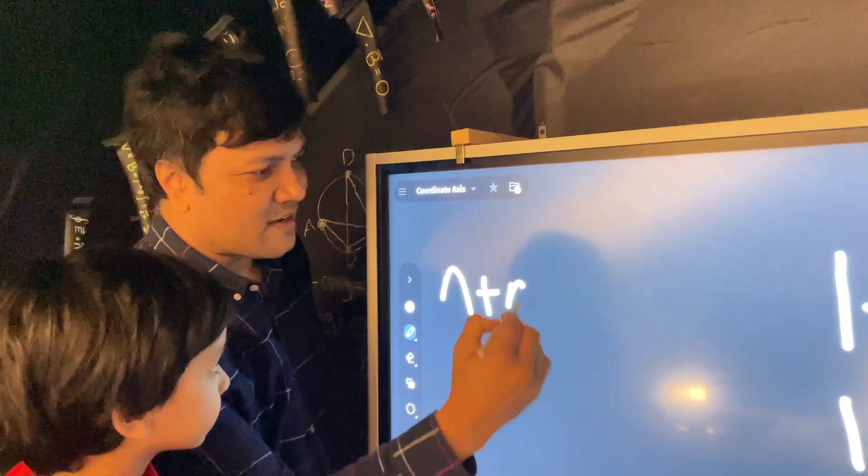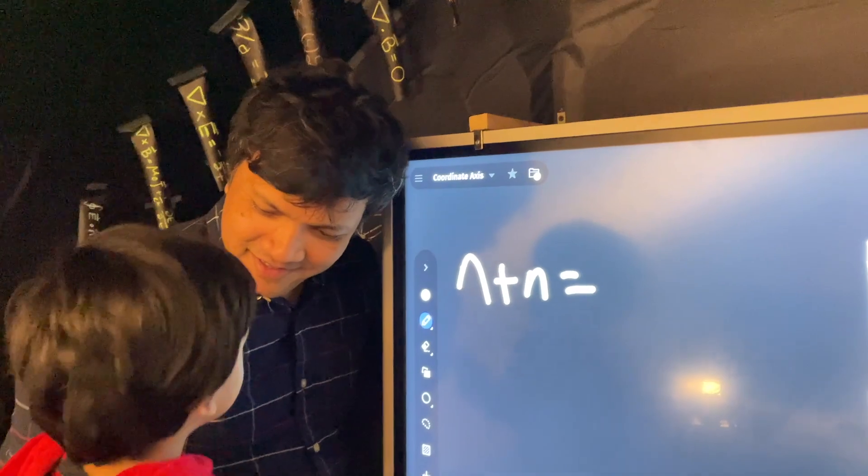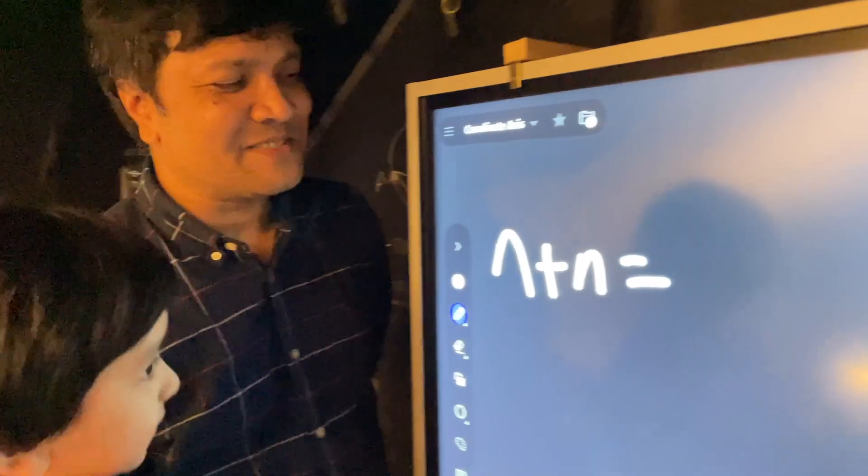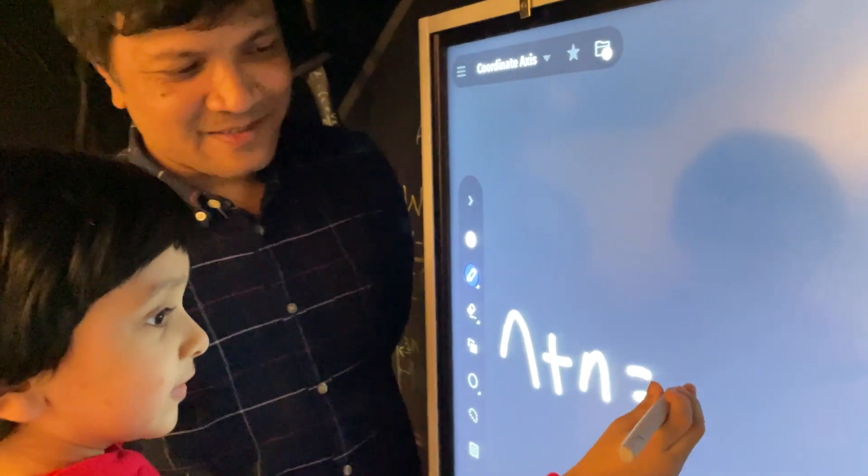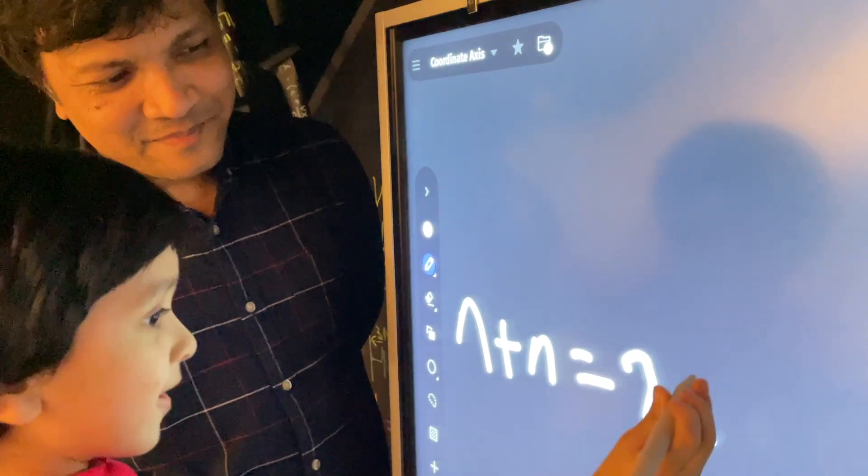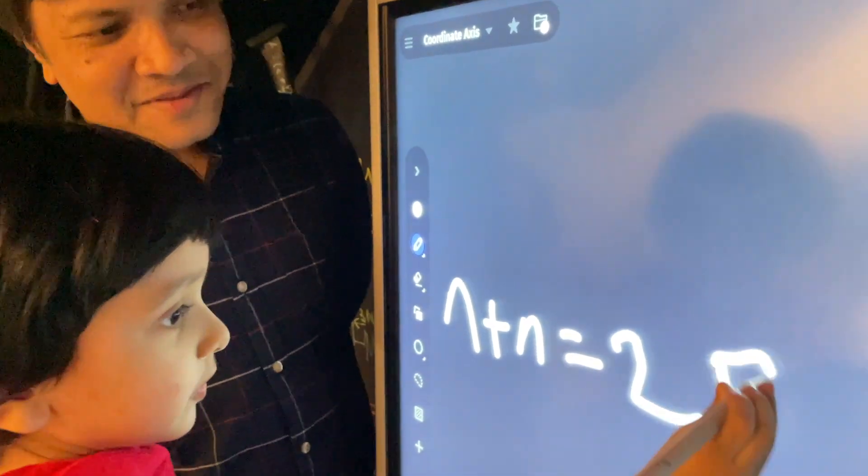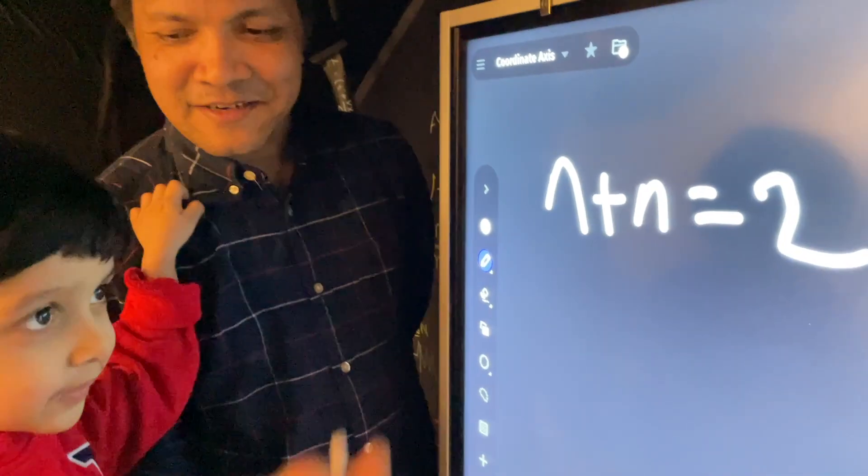So, n plus n. Little fellow, what is n plus n? Two n. Two n. That is correct. Can you write it? That's beautiful. This little fellow is smart. He's smart. Wow.